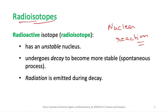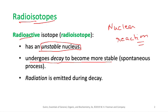Radioisotopes are isotopes that are unstable and spontaneously emit energy to form a more stable nucleus. Their nucleus is unstable, so to become stable they release excess energy from the nucleus. This decay occurs spontaneously, and the energy is released in the form of radiation.